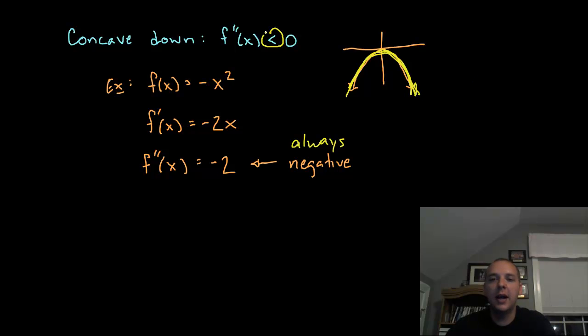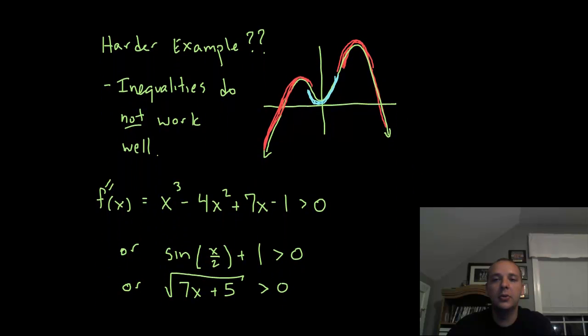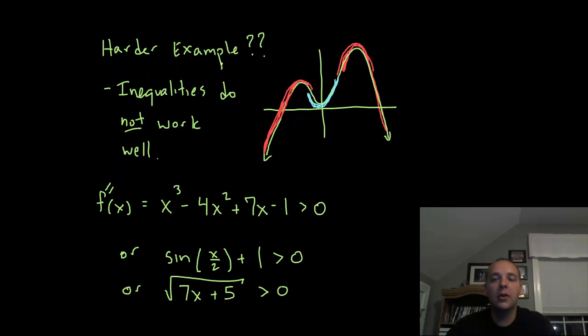Here's where the inequality idea breaks down. The inequality is totally true - concave up is where f''(x) > 0, and concave down is where f''(x) < 0. But if you try a harder example, the inequalities do not work well. In theory it's a good idea, but technically trying to solve these inequalities is very difficult.